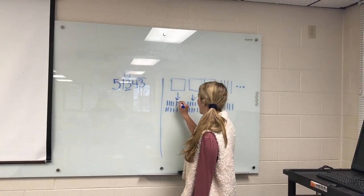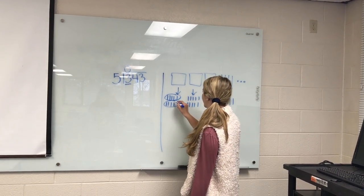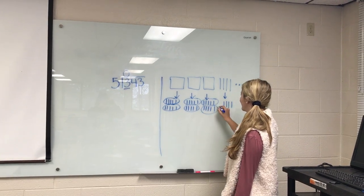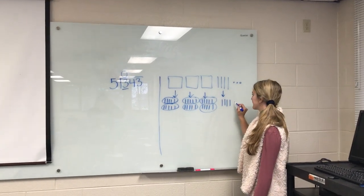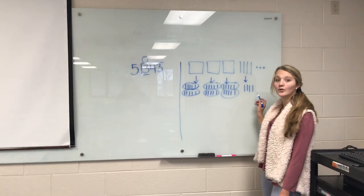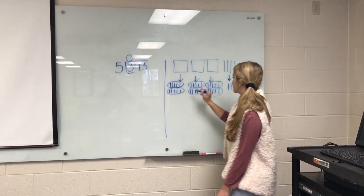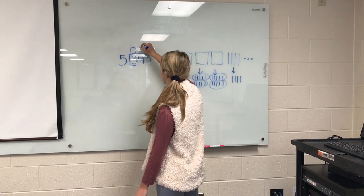So let's circle groups of 5. 1, 2, 3, 4, 5, 6. The answer is 6, and we are not circling this one because it only has 4 longs, not 5. So our answer is 6. So we are going to write a 6 up here.